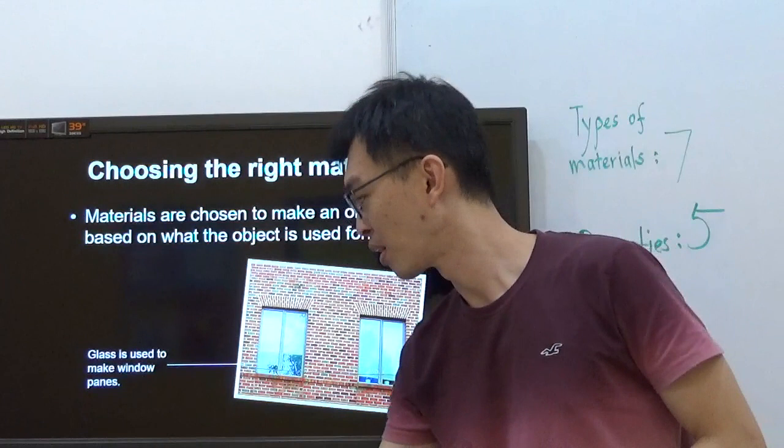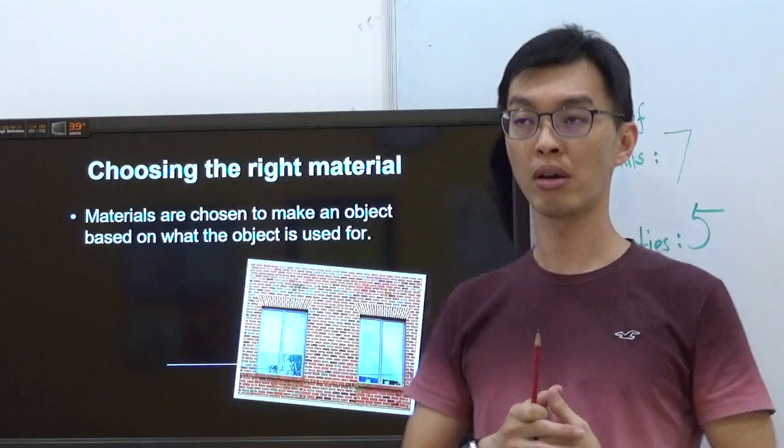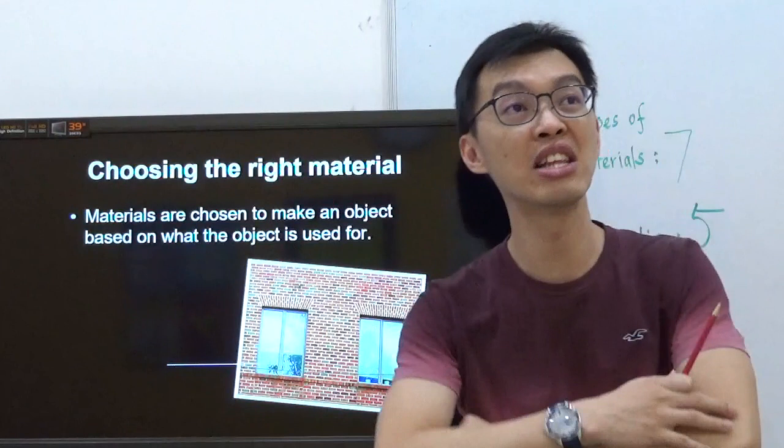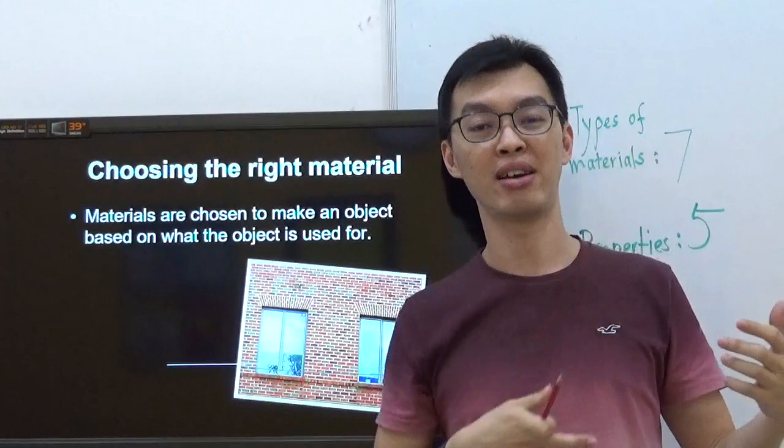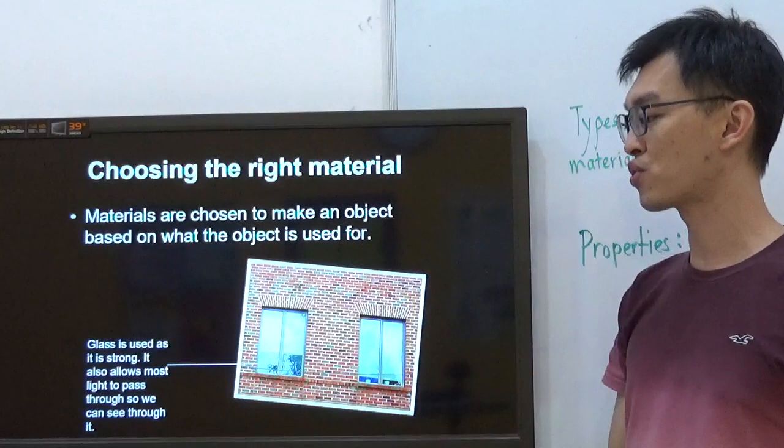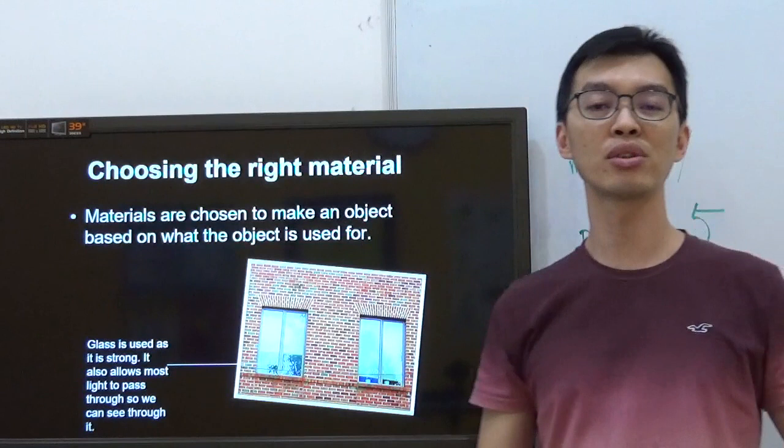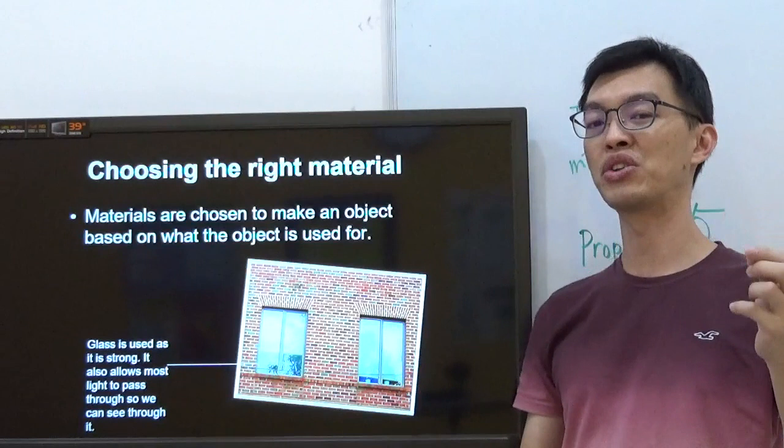Glass is used to make window panes. Why? Imagine I have a house but don't have windows, I'll be living in darkness. I want to see the scenery out there, the beautiful clouds. The window panes must be transparent to allow us to see through. Glass is used as it's strong, and it also allows most light to pass through so we can see through it. The idea is it is strong and transparent.